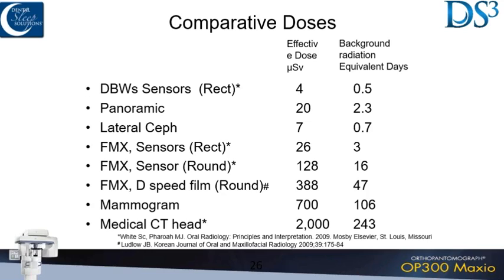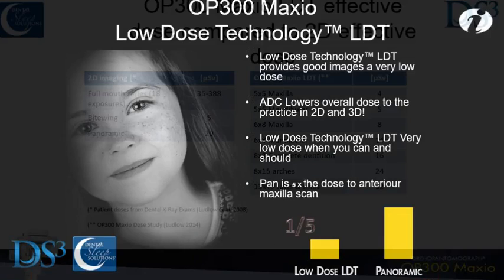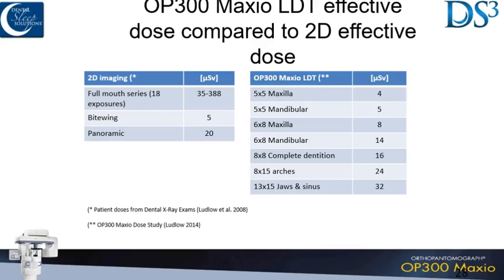David, I'll let you explain the equivalence here. None of us hesitate to take pans or full mouth series. With a full mouth series using round collimation, your digital setting is still 128 microsieverts. When you look at cone beam with low-dose protocols, you can get down as low as taking a bitewing. So when you're comparing cone beam to pans, the story has really changed in the last couple years. For airway, 32 microsieverts compared to a full mouth series at 128 — it's night and day.